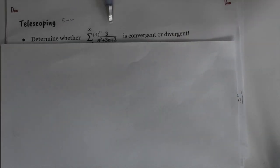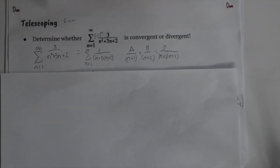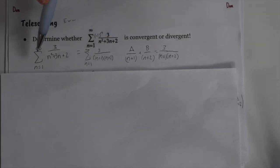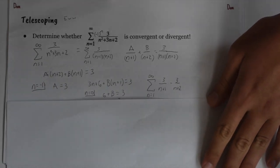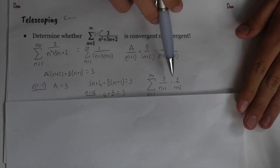Our next test is the telescoping test — this one is very tedious. The question is: determine whether this series is convergent or divergent. The first step is always to do partial fraction decomposition (PFD). We break it up: n+1 times n+2 equals n² + 3n + 2, and after PFD we get the summation from 1 to infinity of 3/(n+1) minus 3/(n+2).